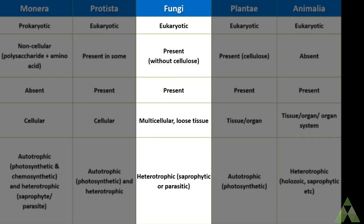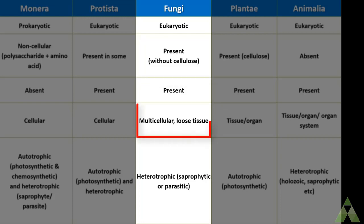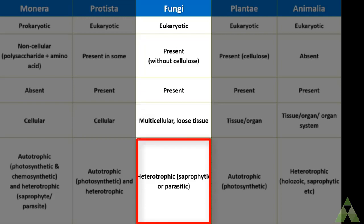Fungi are eukaryotic. They have a cell wall, but it is not made up of cellulose — it is made up of chitin. Nuclear membrane is present. Body organization can be multicellular or loosely held with tissue. Mode of nutrition is heterotrophic, consisting of saprophytic as well as parasitic types.